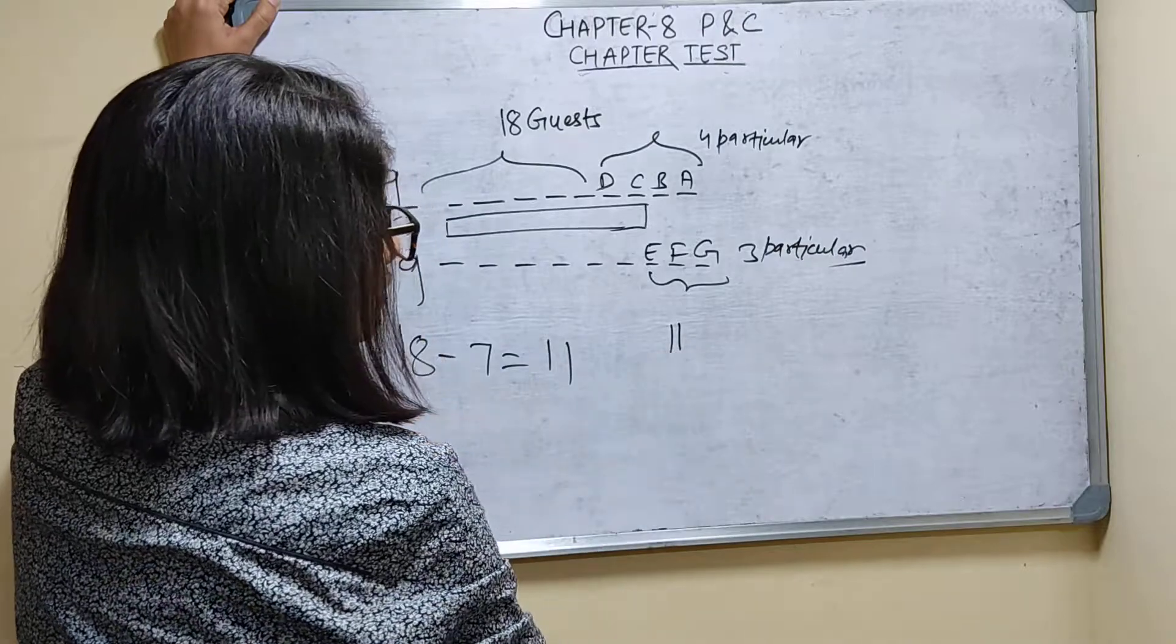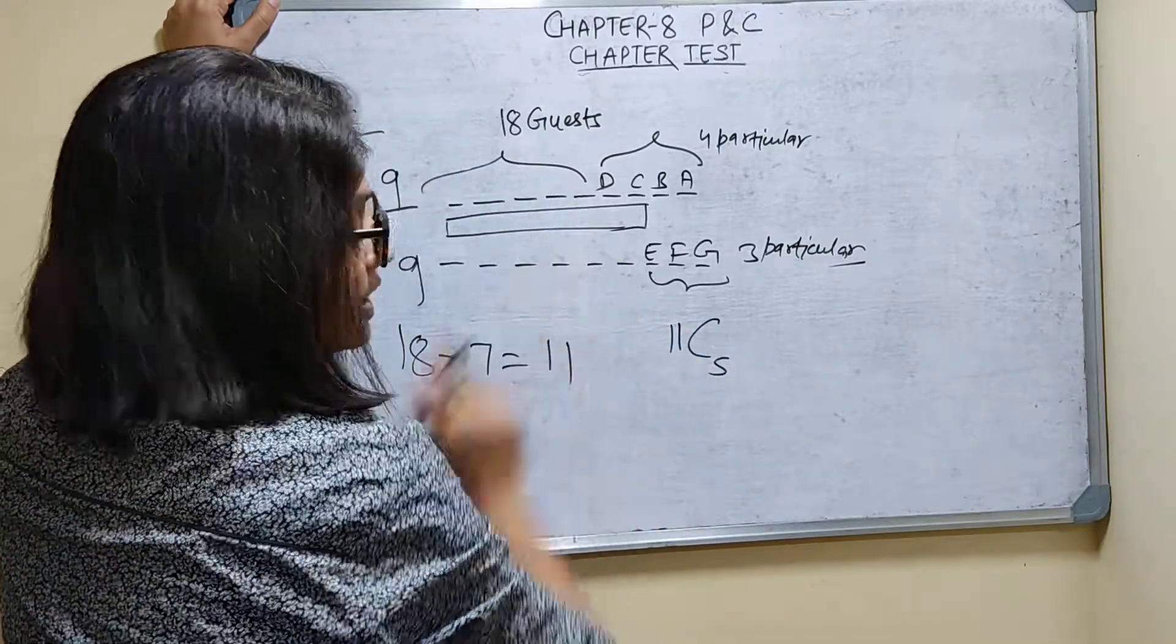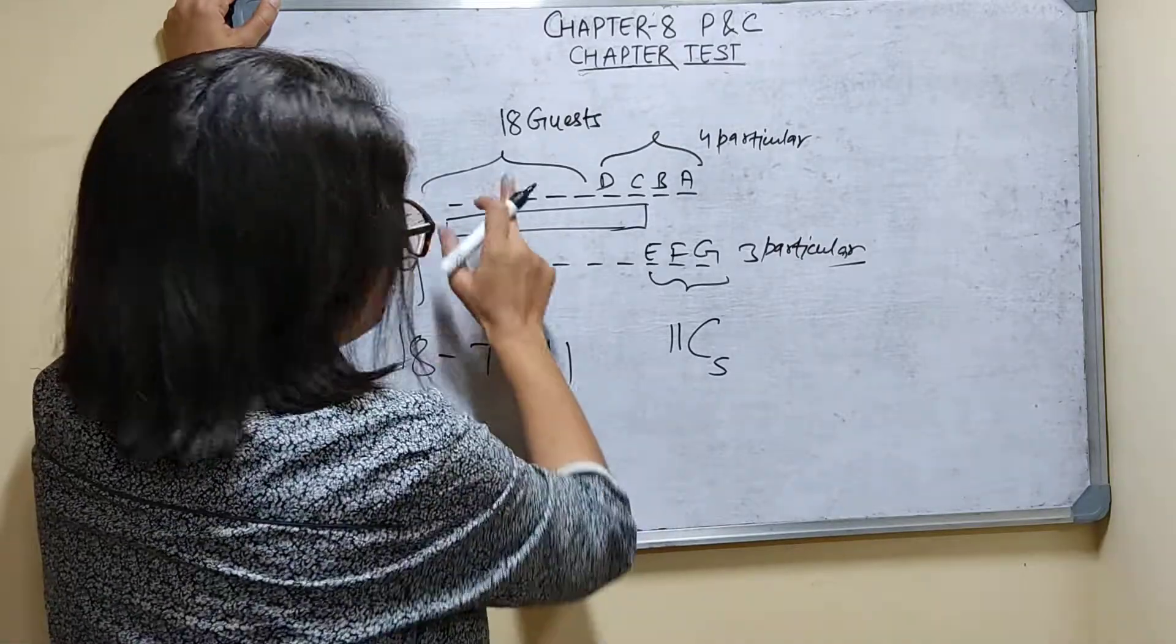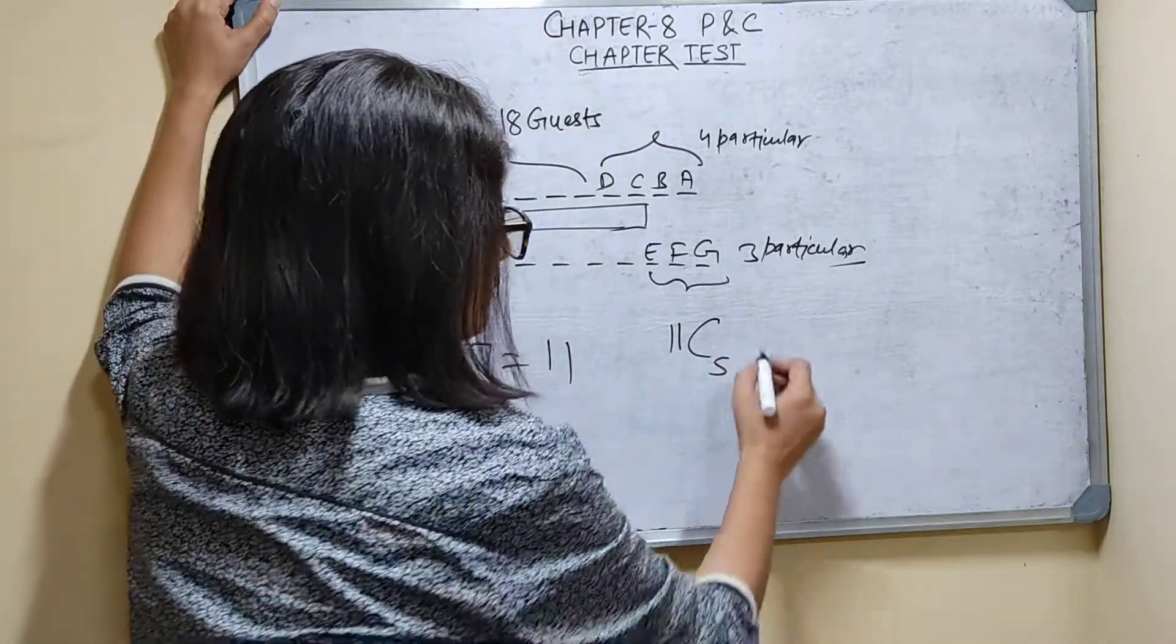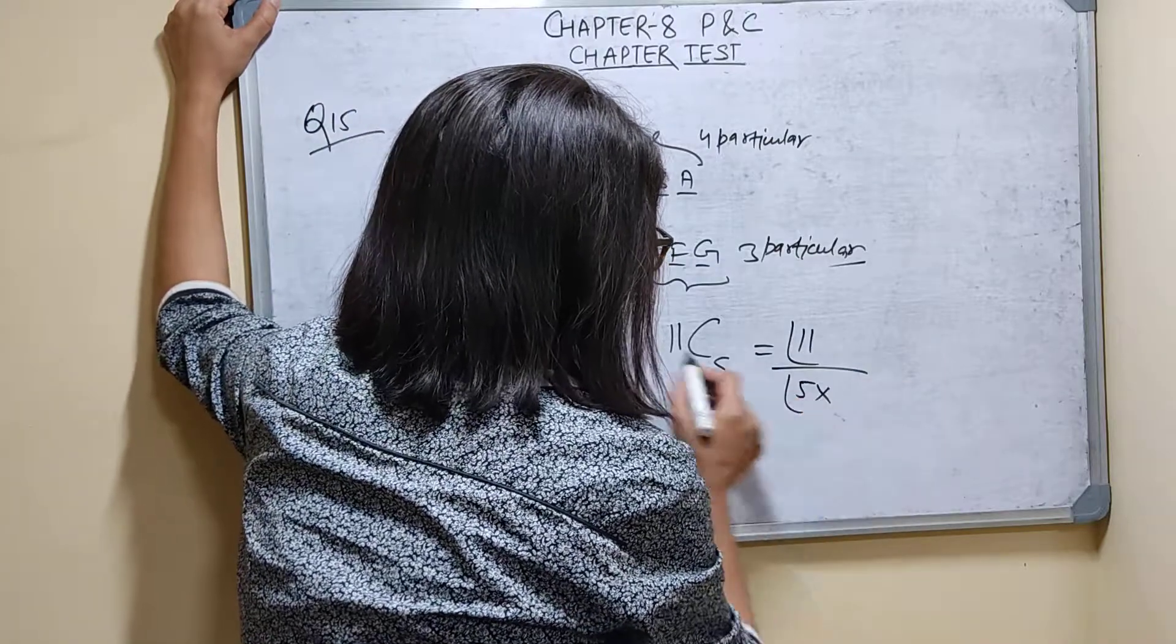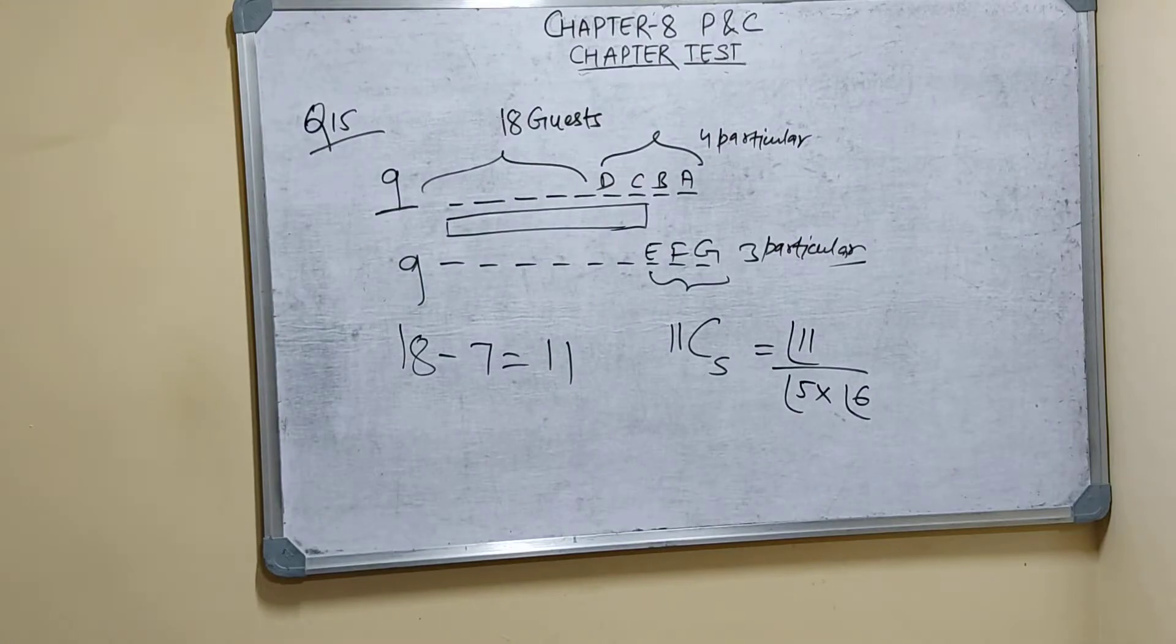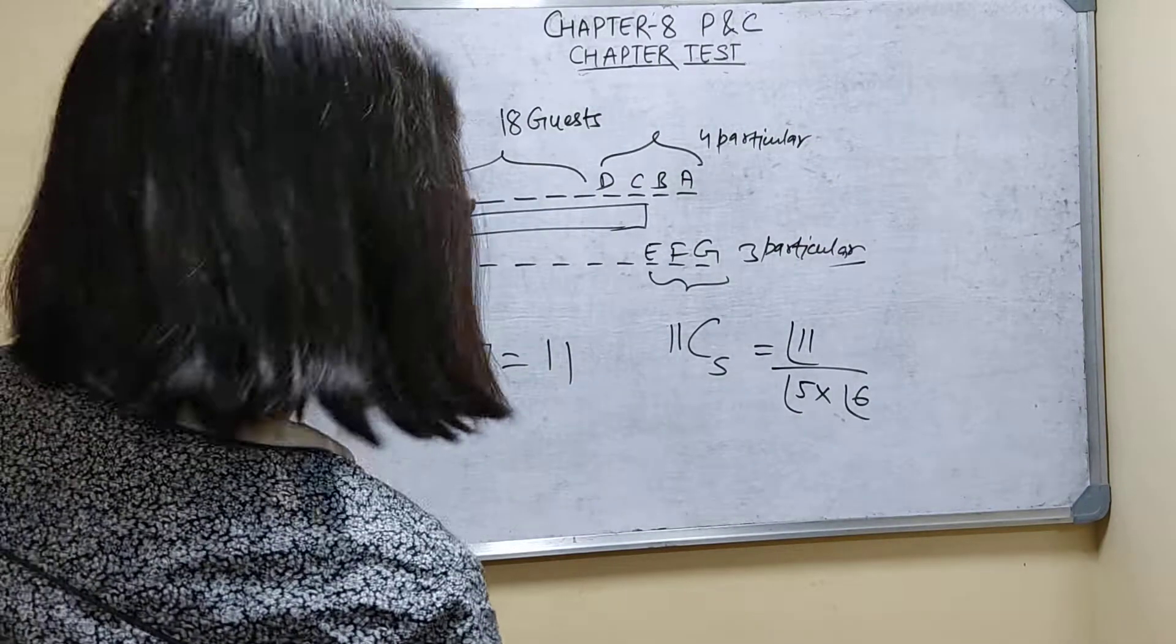So take 11 are there. 11C5 ways they can sit here. From 11, 5 can sit here. 11C5. So what is 11C5? Factorial of 11 upon factorial of 5 into factorial of 11 minus 5, that is factorial of 6.